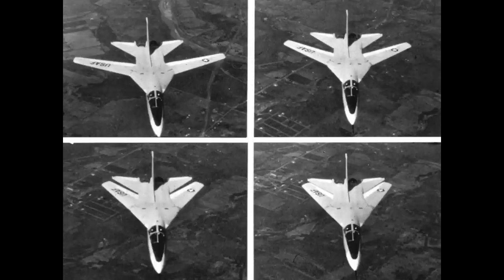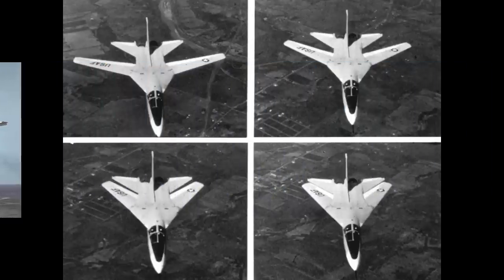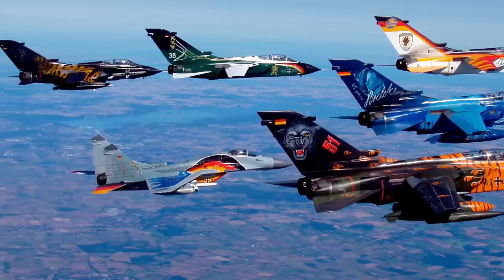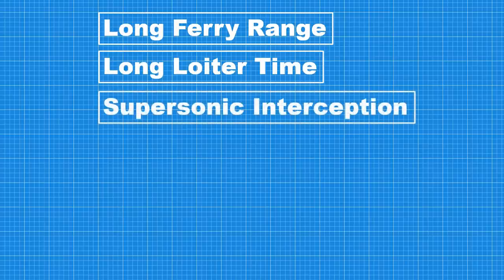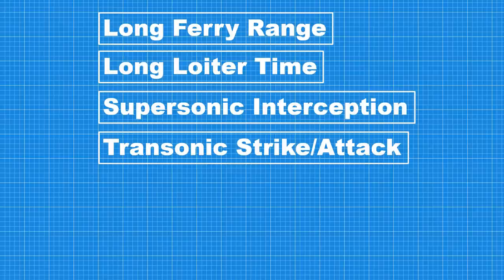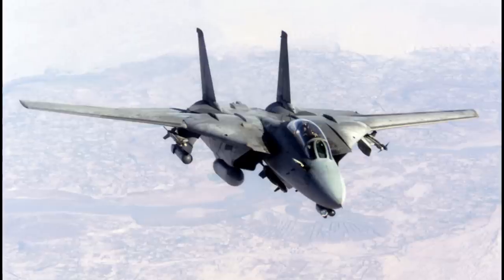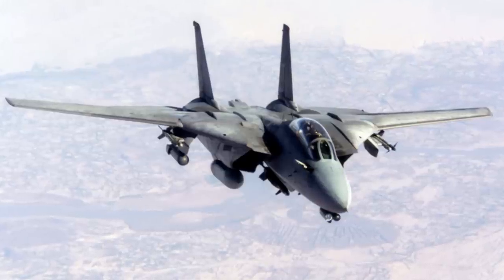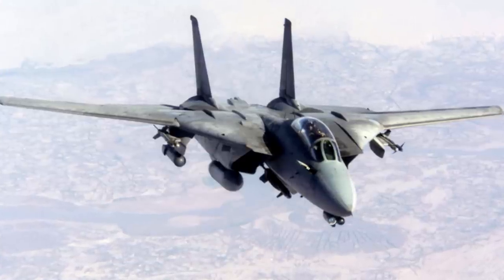As we saw at the beginning, the specifications associated with the TFX program were apparently incompatible. During the 1960s, several programs presented similar, apparently incompatible requisites: long-range subsonic cruise or long loiter time, high supersonic interception speed, and transonic strike attack — all while operating from short runways or from a carrier. A solution had to be found, and the variable sweep wing was the solution that succeeded in meeting all these incompatible requisites. And this is the answer to our initial question.